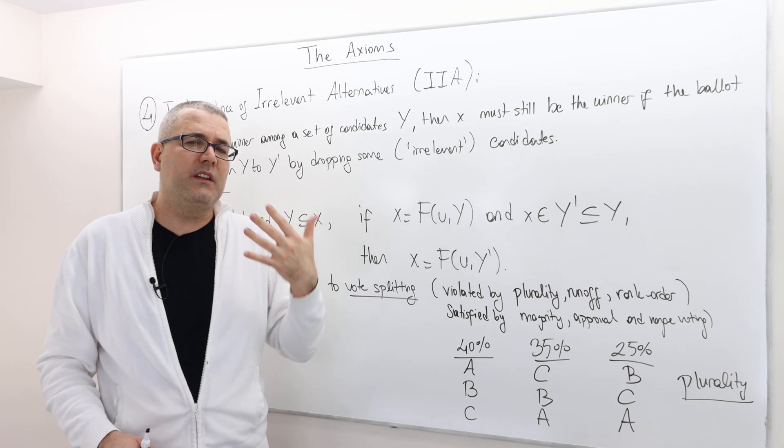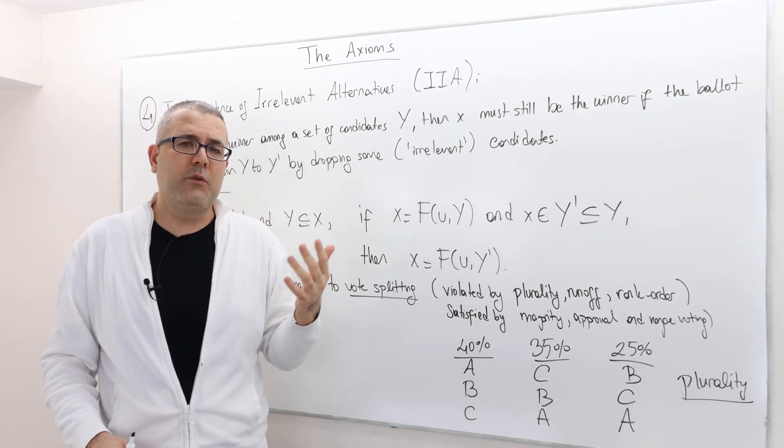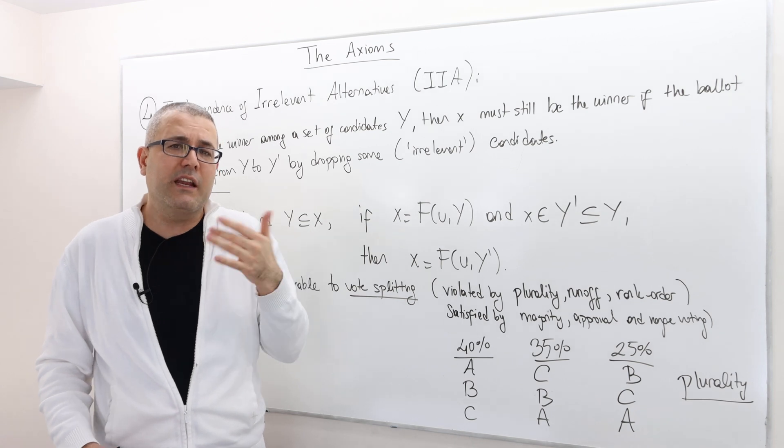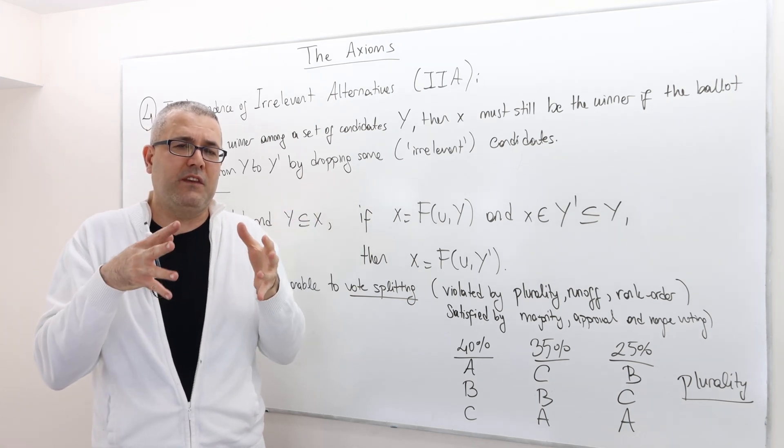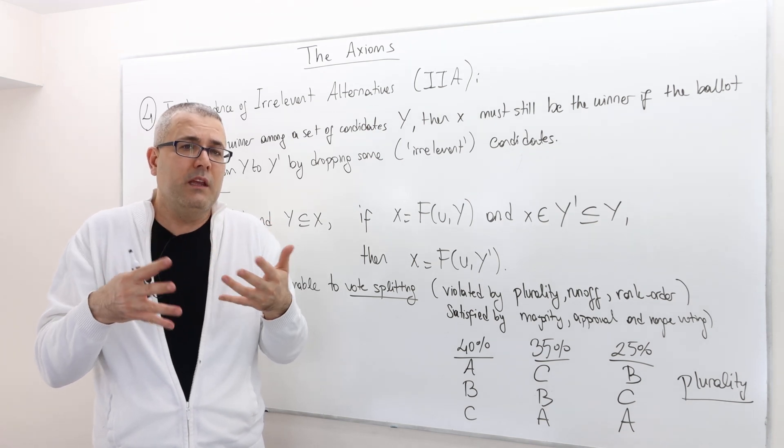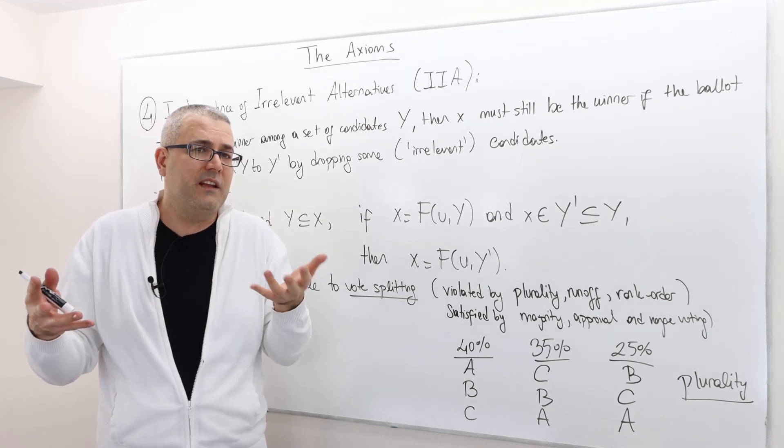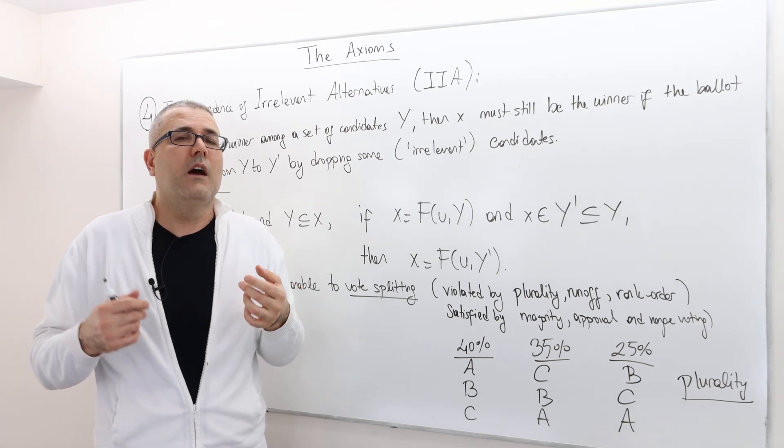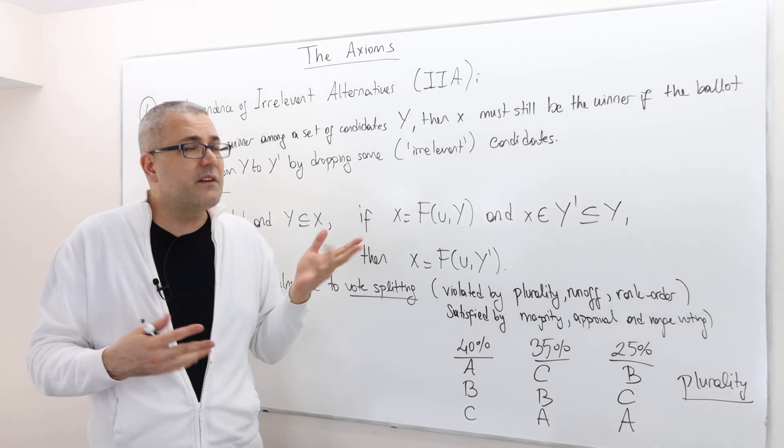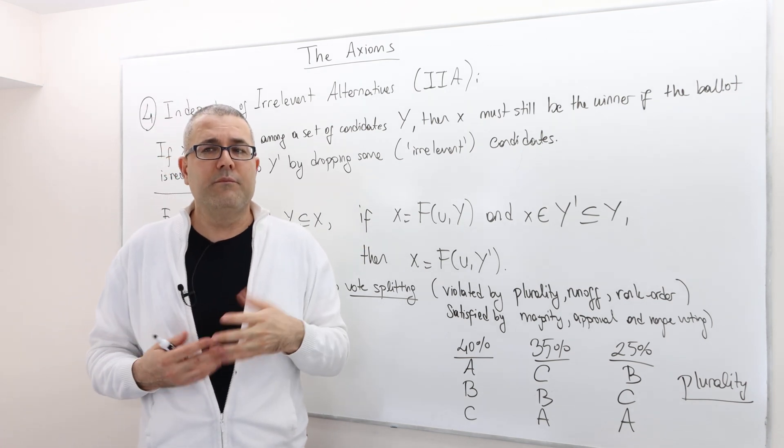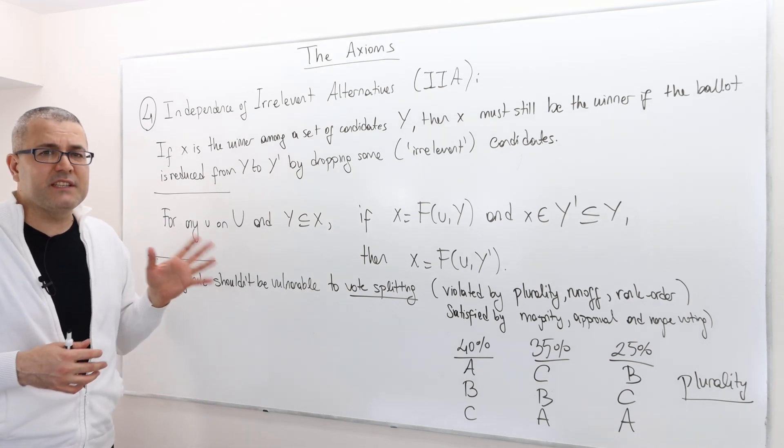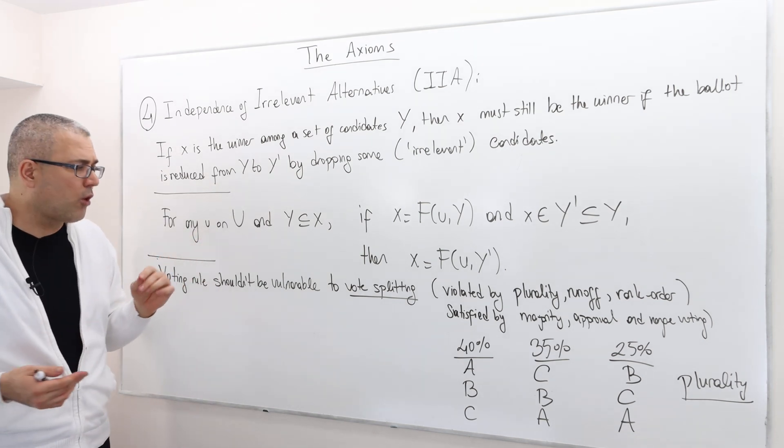It is intuitive in the sense that according to this voting rule, the candidate X beats all the other candidates. So we are shrinking this set of candidates. So that means X still should be beating all the other candidates according to this voting rule. So that's the idea. So it makes sense. But nevertheless, it's a widely criticized assumption because it's a strong one.